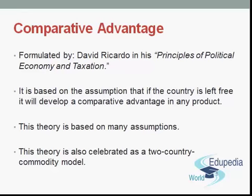The Ricardian theory was based on many assumptions. First, labor is the only element of the cost of production. Second, goods are exchanged against one another according to the relative amounts of labor embodied in them. Labor is perfectly mobile within a country but perfectly immobile between countries. Labor is homogeneous and production is subject to the law of constant returns. International trade is free from all barriers, there is no transport cost, there is full employment, perfect competition, and there are only two countries and two commodities.